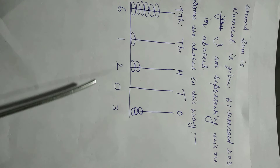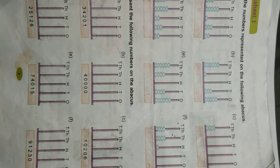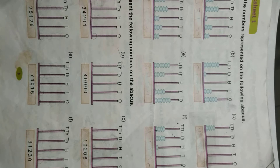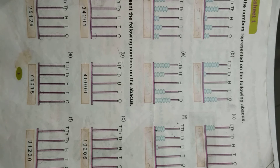We represent the following numbers on their abacus. Now I am giving you some assignment. Worksheet 1, page number 3 is given. In the first question, write the numbers represented on the following abacus — count the bits of different places and write the respective numbers. In the second question, a number is given and you have to draw the bits according to the number in the respective places. Thanks for the first lesson. If there is any question, ask me. Have a good day.